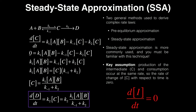Setting dC/dt equal to zero, I solve for the concentration of the intermediate C. Moving the negative terms to the other side gives K-1 times C plus K2 times C equals K1 times A times B. Factoring out C yields C times (K-1 plus K2) equals K1 times A times B. Dividing both sides by (K-1 plus K2), the concentration of C equals K1 times A times B divided by the quantity (K-1 plus K2).